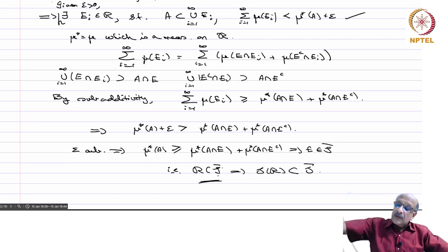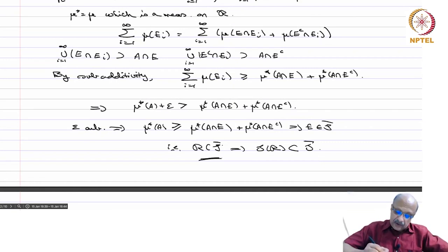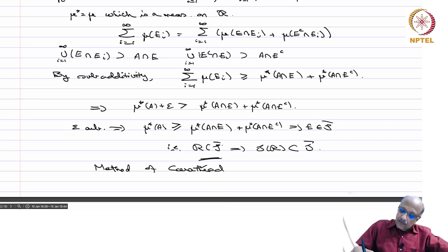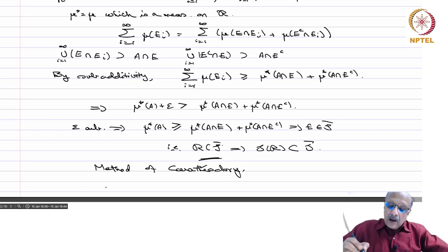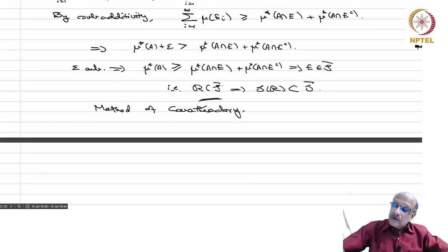This construction — the extension of a measure to a complete measure — is due to Carathéodory. This is called the Carathéodory extension of a measure. You get a complete measure on all the measurable sets, and it extends to the sigma ring containing the original ring. So if you construct a measure on a ring, you can always extend it to the sigma ring and also extend it to a complete measure on a slightly bigger sigma ring.